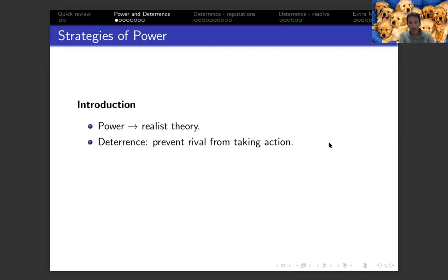In the previous lectures, when we talked about realist theory and near-realism and rational choice, we talked at length about power and how realist theories view it as the driver of international behavior. Now I want to focus more on the strategic aspect — how do we actually apply that power in reality? From a strategy standpoint, the most common use of having a power advantage is through deterrence and coercion. Today we'll talk about deterrence, and we'll talk about coercion on Thursday.